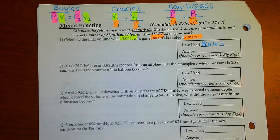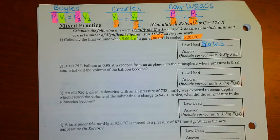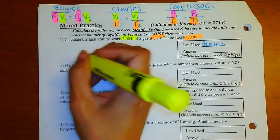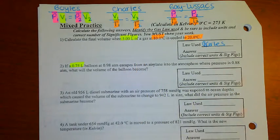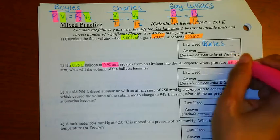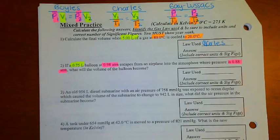Number two: if a 0.75 liter balloon at 0.98 atmospheres escapes from an airplane into the atmosphere where pressure is 0.88 atmospheres, what will the volume of the balloon become? We have volume and pressure — liters is a unit for volume and atmospheres is the unit for pressure. So the law that deals with volume and pressure would be Boyle's Law.